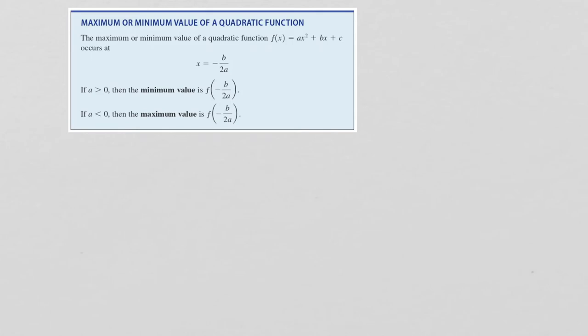What we should take away from the last example is that completing the square can be a very tedious process. There is another way to find the maximum or minimum value — that is, another way to find the vertex. To find the vertex, we use the formula: for a function in general form ax² + bx + c, the vertex occurs at x = −b / (2a). Then you find the minimum or maximum value by plugging the x-coordinate of the vertex into the function.